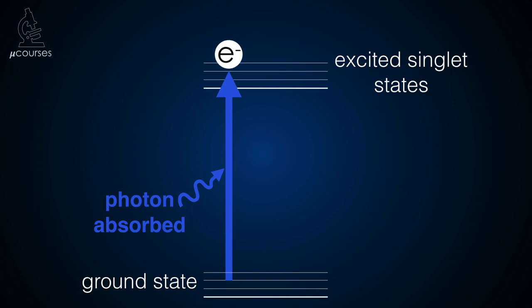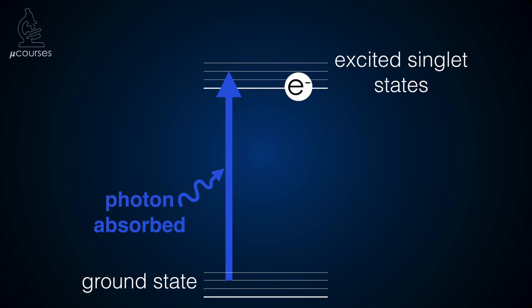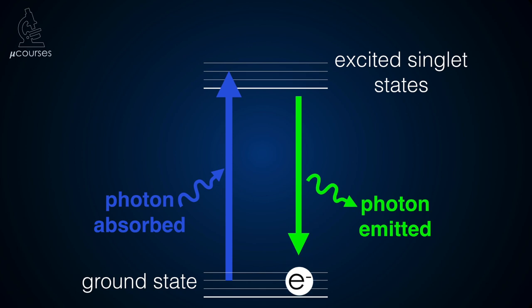While in this excited state, the fluorophore loses a bit of vibrational energy as heat. The electron then drops back down to the ground state and releases the remaining energy as a photon of light. The energy of the excitation photon was higher than that of the emission photon, so the excitation and emission of fluorophores have different wavelengths. This is a super fast reaction — emission of a photon occurs within nanoseconds of excitation.